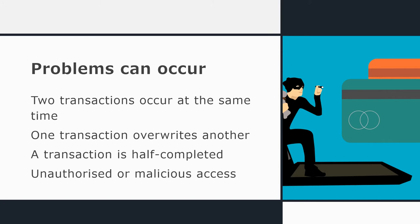Something that happens quite a lot with internet connections is you can get halfway through a transaction and then the connection can fall over, leaving the transaction half completed. For example, worst case scenario, you might have paid for an item and then the connection fails before they take your details for delivering the item to you. And of course there's the ongoing problem of hackers and people trying to commit fraud, particularly with a database that holds financial data — that can be quite a big problem.